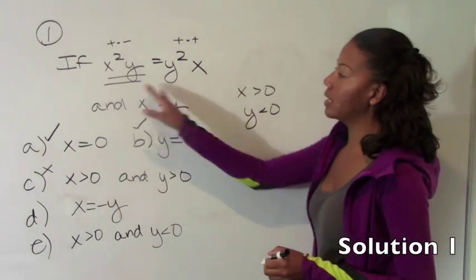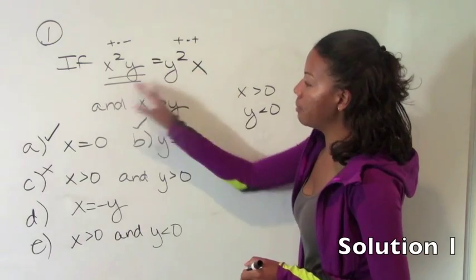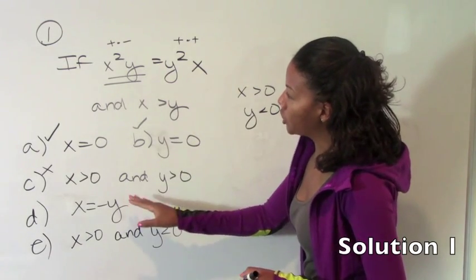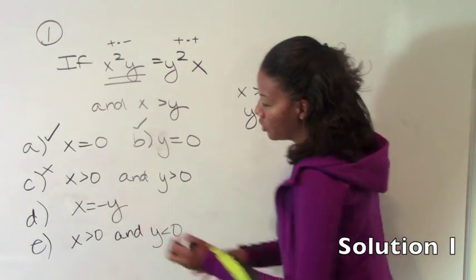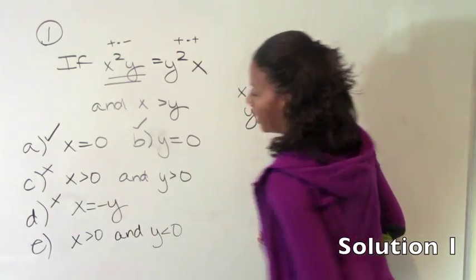So here, the right side is positive and the left side is negative, so they can't be equal under those circumstances. So d is not true.